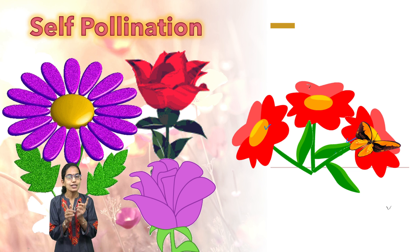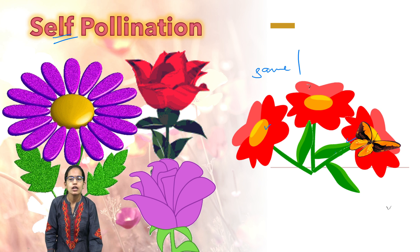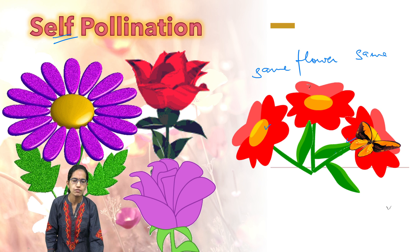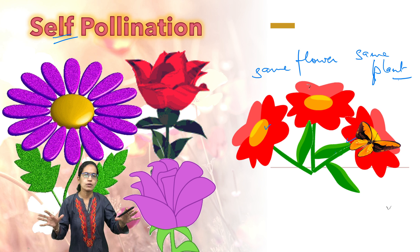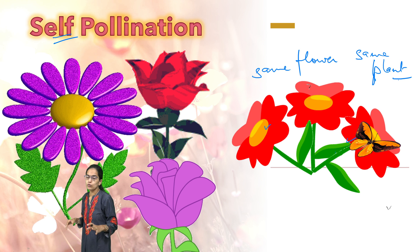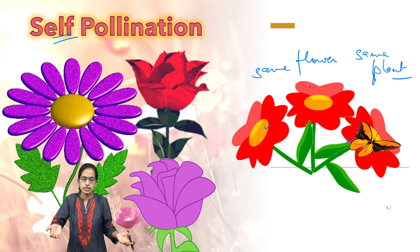So the plant should always be the same, and therefore we call this self-pollination — either the same flower or a different flower within the same plant. There is no huge amount of pollen grains required, and no pollinating agents are required for self-pollination.